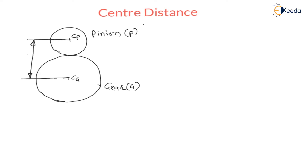This distance is called center distance, denoted by capital C. The center distance is nothing but the radius of the pinion plus the radius of the gear. Therefore, center distance equals radius of pinion plus radius of gear.